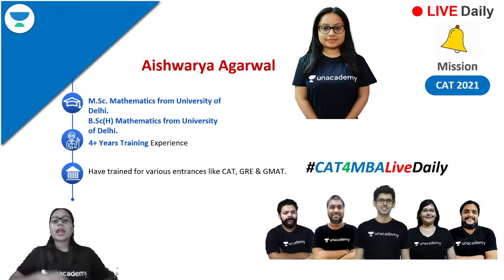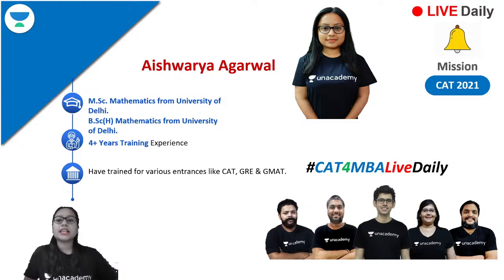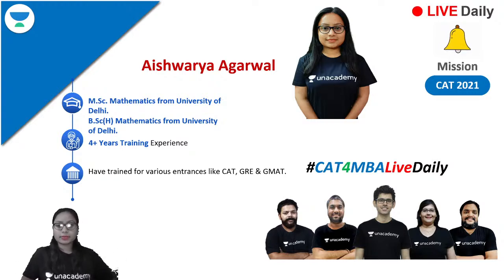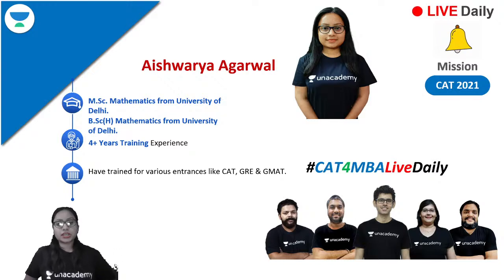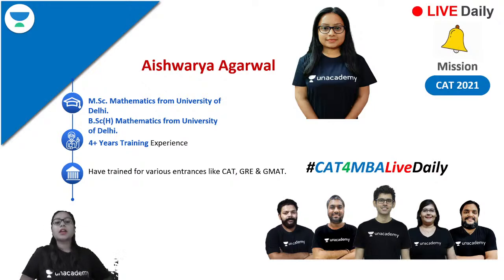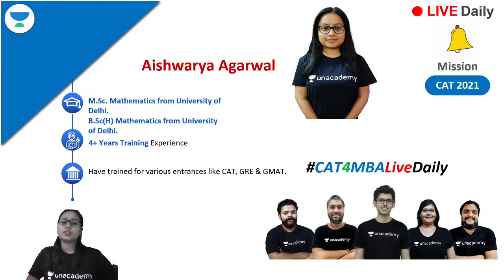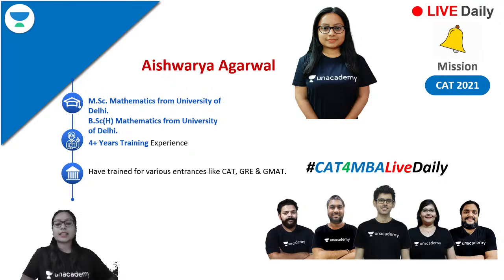Before I actually start with my class, let me tell you a bit about myself. My name is Ashwarya and I have done my master's in mathematics from University of Delhi. Prior to that I have done my graduation in mathematics from Miranda House, University of Delhi. I have a total of 4 years of training experience for various management entrances like CAT, GRE and GMAT.